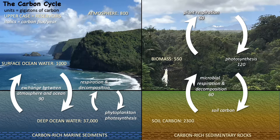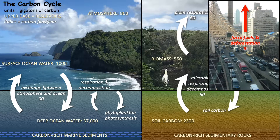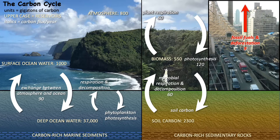These natural cycles run in balance. Photosynthesis removes carbon from the atmosphere, and respiration and decay return exactly the same amount. The inputs and outputs are equal, and the amount of carbon remains constant in all the reservoirs. When humans get involved, we upset the natural balance. Burning fossil fuels creates a new carbon input to the atmosphere that has no compensating output, so atmospheric carbon accumulates.